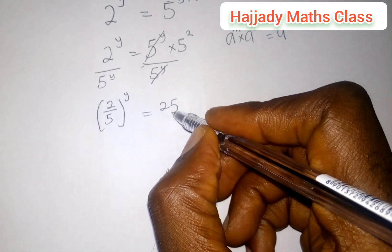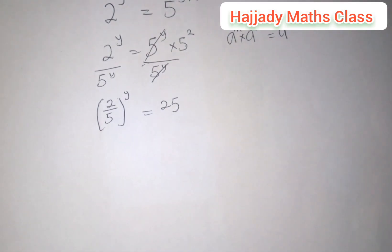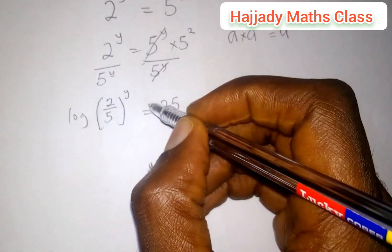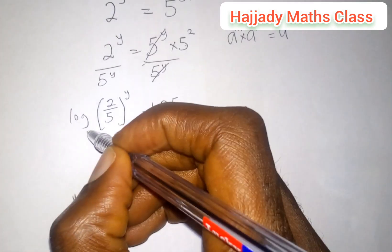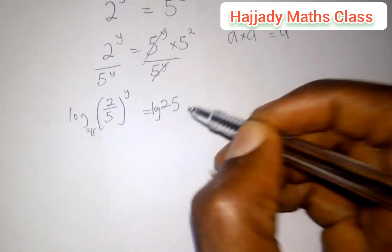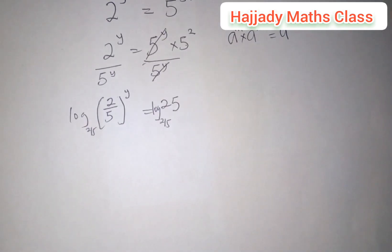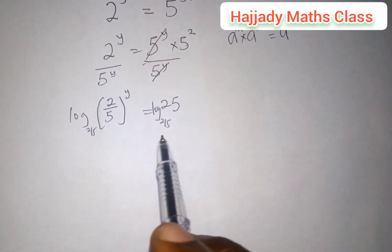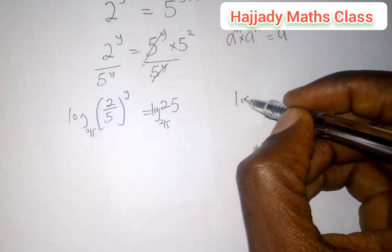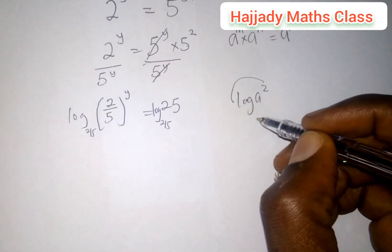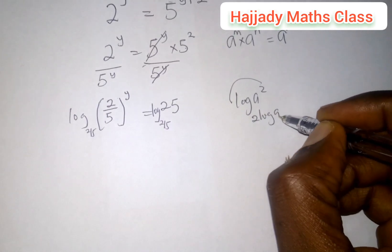Simplifying this further, there is a need for us to introduce logarithms. We apply log to both sides. Here, we have log 2 over 5 raised to power y into base 2 over 5. The rule of log says that if you have log a raised to power 2, this goes to the back as 2 log a. We are applying the same rule here.